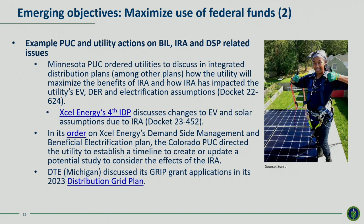For the IRA, production and investment tax credits can lower clean energy and storage system costs and may accelerate adoption of renewable energy and storage technologies. Customer incentives can accelerate adoption of building and transportation electrification and efficiency technologies. In Minnesota, the PUC ordered utilities to include a discussion of how the utility will maximize benefits of the IRA and explain how IRA has impacted EV, DER, and electrification assumptions. In Colorado, for Xcel's demand-side management and beneficial electrification plan, the PUC ordered the utility to create or update a potential study to consider the effects of IRA. Utilities including DTE, ComEd, and Orange and Rockland in New York are all discussing how federal EV and IRA incentives may influence their planning, and we anticipate seeing more changes to load forecasts and technology costs driving changes in distribution system planning.